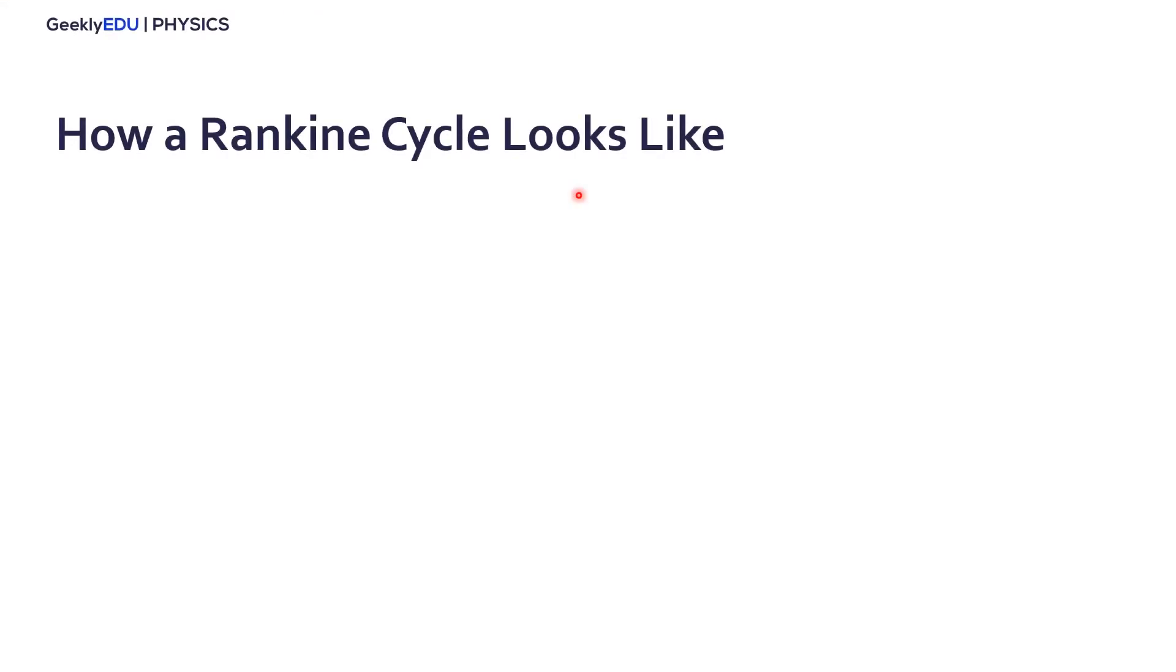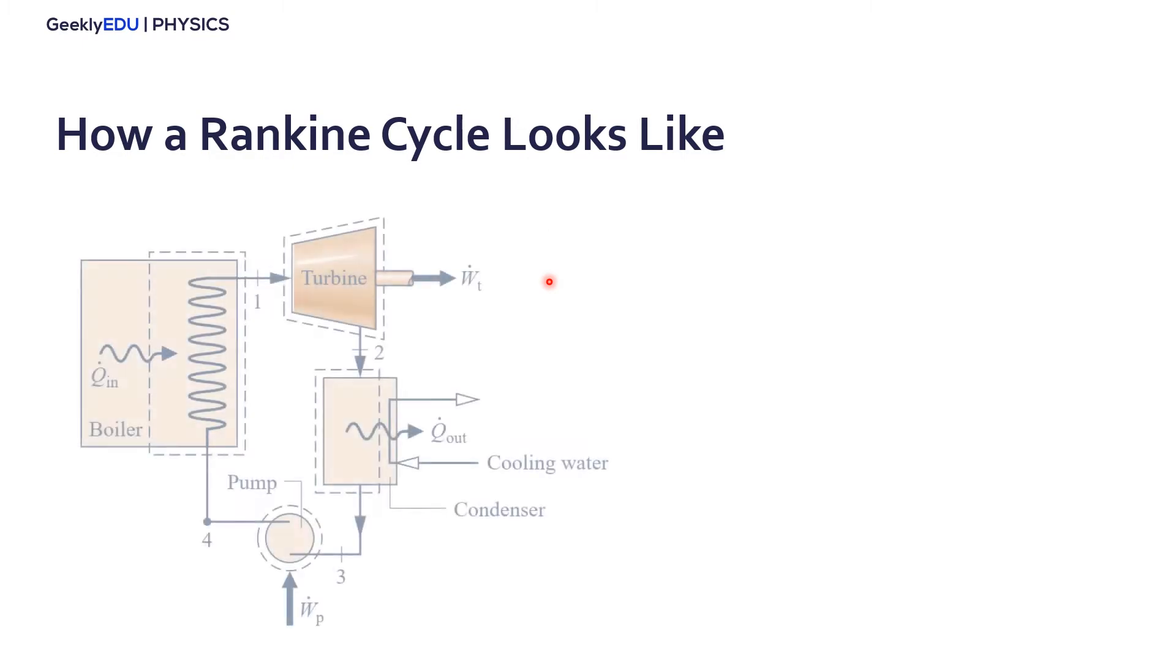Let's start taking a look at how our Rankine Cycle looks like. It looks like this. We basically have four components: we have a turbine, we have a condenser, we have a pump, and a boiler.